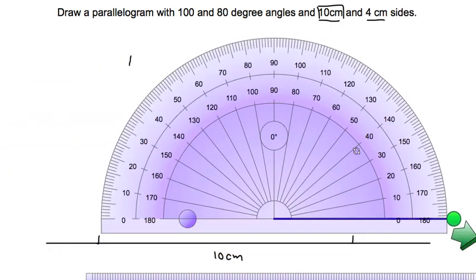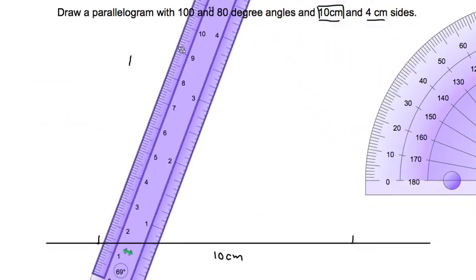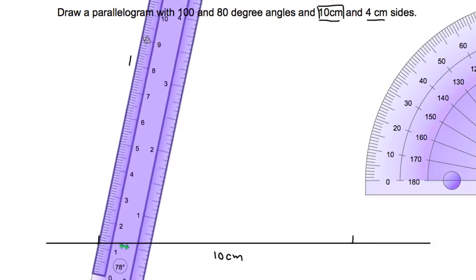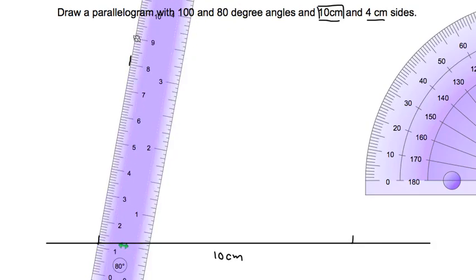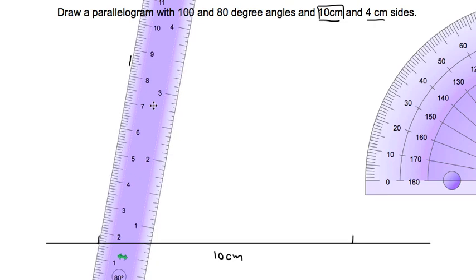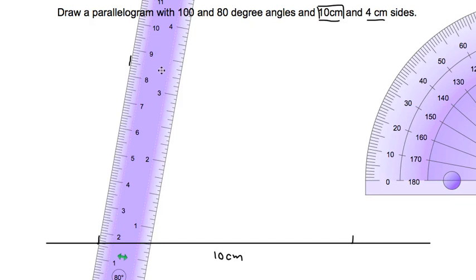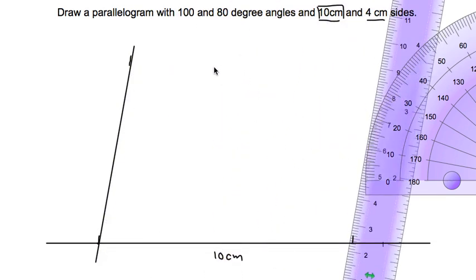Once I have that in place, I can move my protractor out of the way, line up my straight edge here. It should line up pretty well. And then drawing a nice long line there. So I have one of my angles drawn, and now I'm going to draw the other angle.